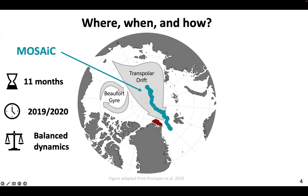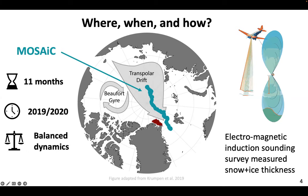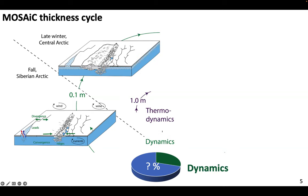We analyzed sea ice thickness using electromagnetic induction sounding surveys with which we detected snow and ice thickness. We could look at the thermodynamic and also dynamic thickness changes of the ice through all the seasons. In fall, the ice was rather smooth with some overfrozen melt ponds, a few leads, and some rich second-year ice. Then over winter, the thermodynamics clearly dominated over dynamic growth with a thickness increase of about one meter.